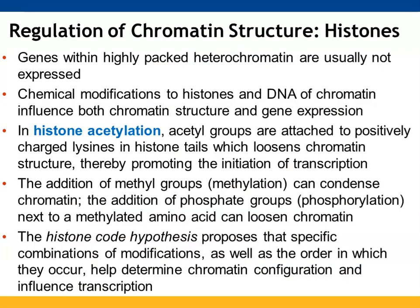We're going to start by talking about chromatin structure. Genes that have highly packed heterochromatin are typically not expressed — those are the ones more heavily methylated. Chemical modifications can influence the chromatin structure and whether genes are able to be expressed when chromatin is so tightly packed. One way to help promote transcription is to add acetyl groups. In histone acetylation, these acetyl groups are added to positively charged lysines in the histone tails, which helps to unwind DNA from around the histones, making it more available for transcription. Methylation, on the other hand, condenses chromatin and minimizes its ability to be transcribed.